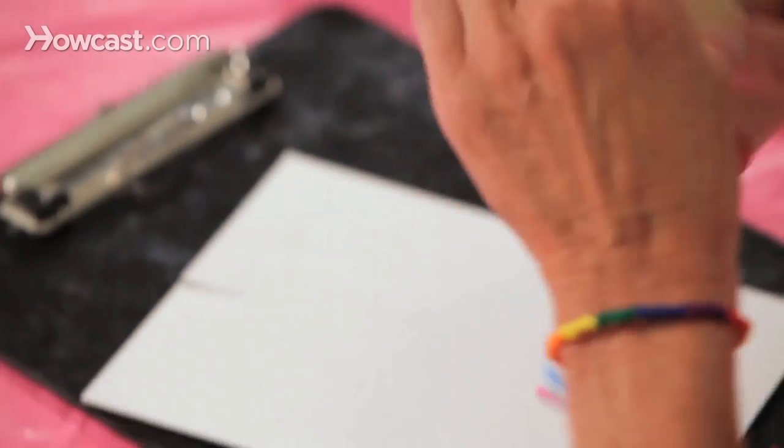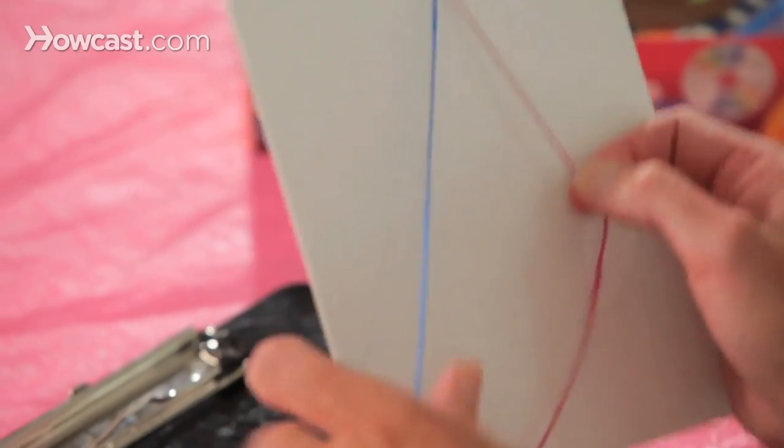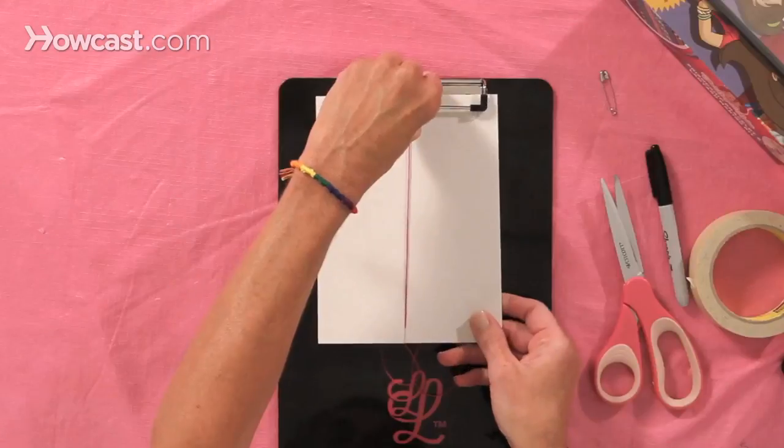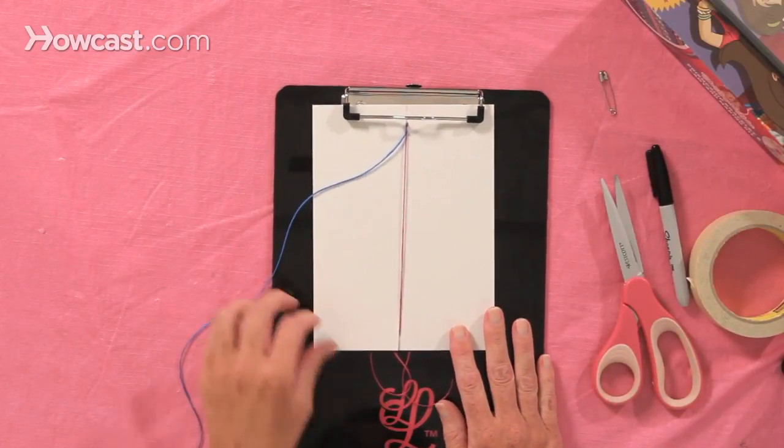We like to add a piece of tape to the back to hold the string in place, and we're going to take one of these strings and put it in the slit at the bottom of the board and attach it to our clipboard. Now we're actually ready to begin making a forward knot.